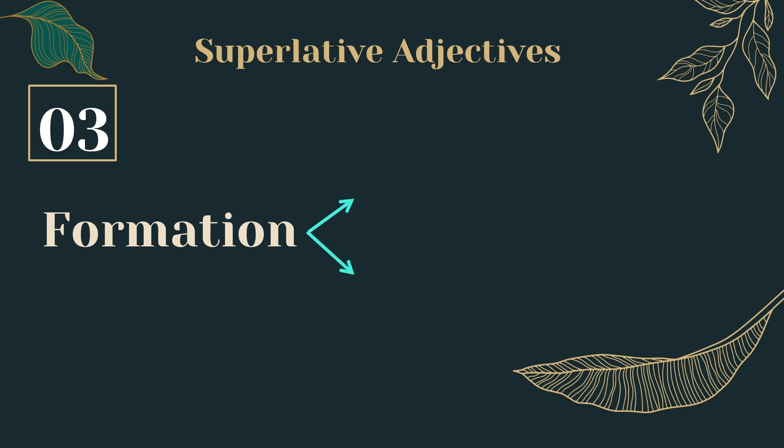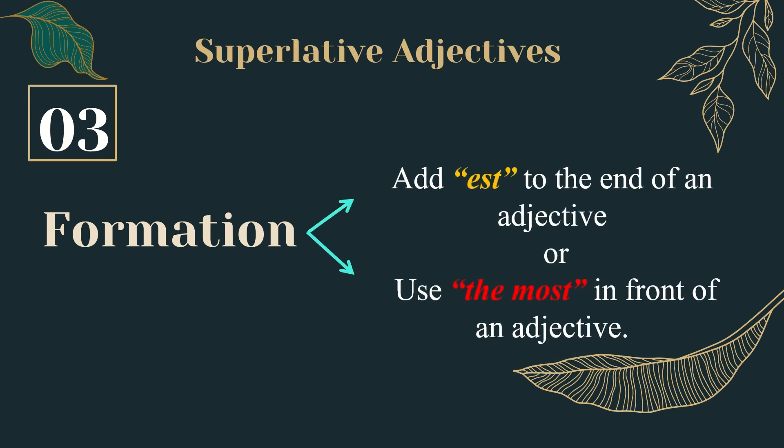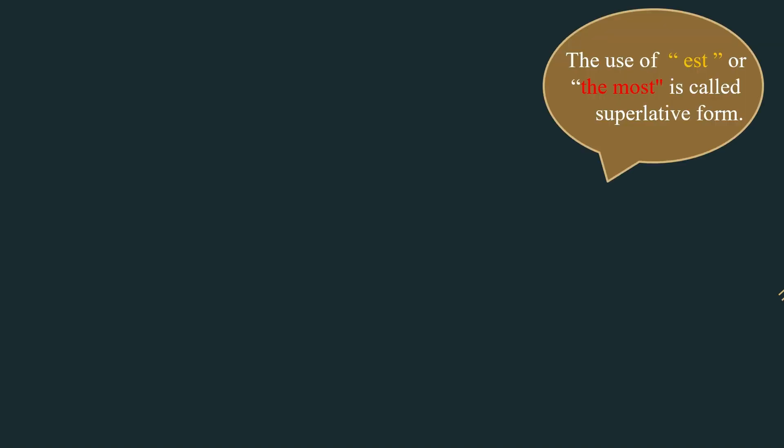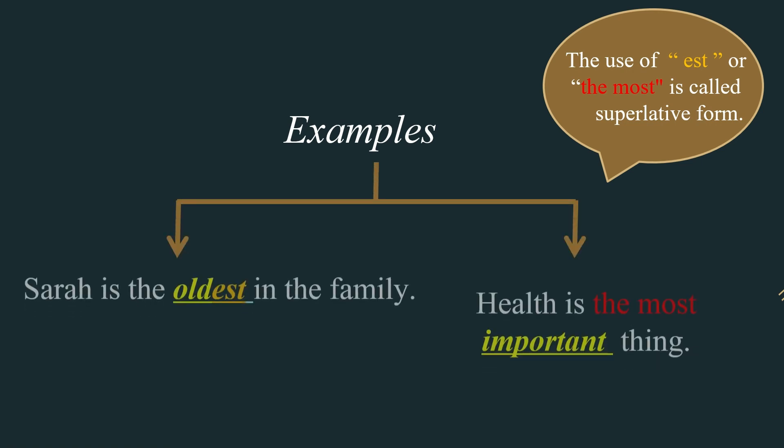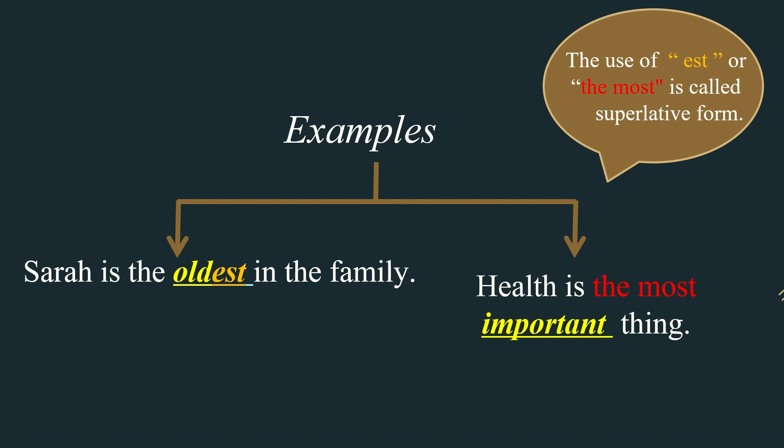There are two ways to form superlatives: one is to add -est to the end of an adjective, or use 'the most' in front of an adjective. The use of -est or 'the most' is called superlative form. For example, 'Sarah is the oldest in the family' — old is an adjective, and adding -est turns it into superlative form. 'Health is the most important thing' — adding 'the most' before an adjective turns it into superlative form.